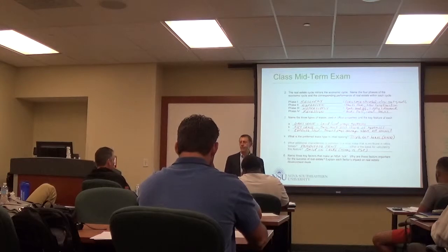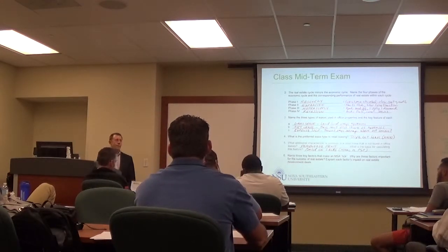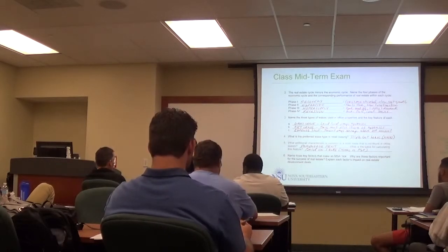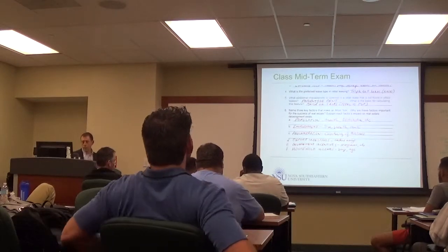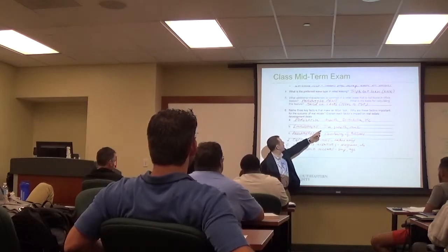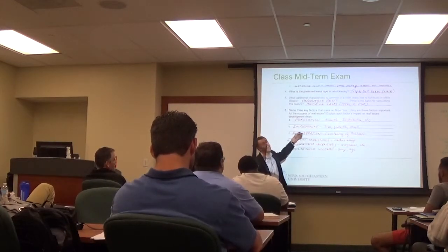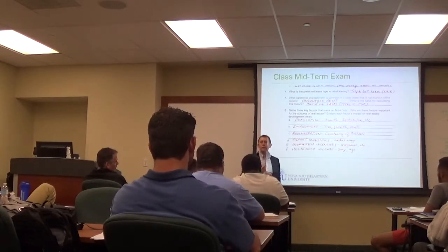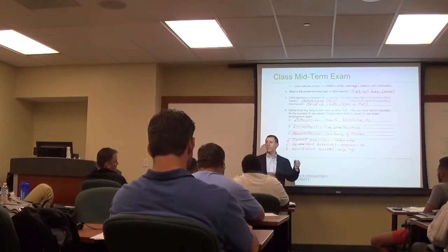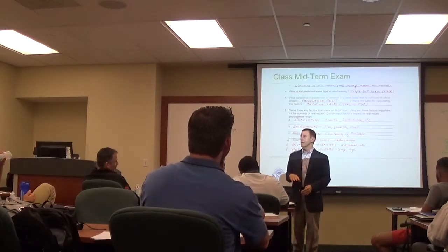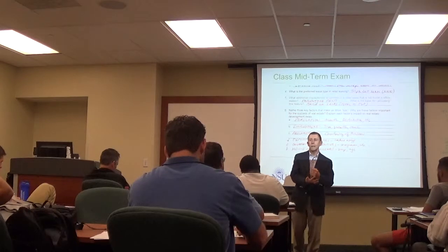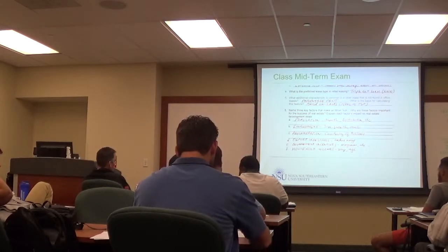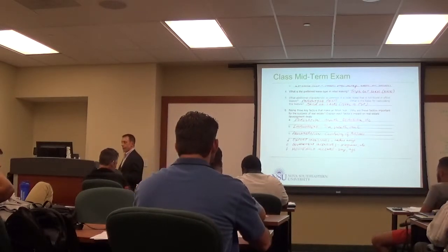What are factors that make an MSA tick? Students answer: population, household income. The professor lists: population impacts growth and distribution; employment impacts rank and size; agglomeration — clustering — has a huge impact on sales and activity. Export industries matter: the more export industries you have, the better. These factors help you understand submarkets and whether there's employment opportunity for office or residential users. Also: incomes and government incentives.